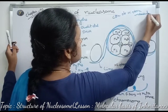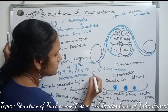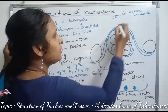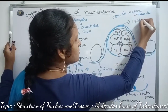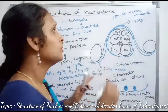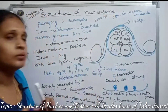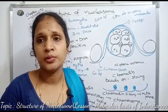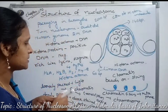In the nucleosome, the linker DNA approximately contains 60 base pairs, and the core of the histone molecule contains 140 base pairs. Totally, a typical nucleosome contains 200 base pairs. The nucleosome also requires some additional histone proteins.